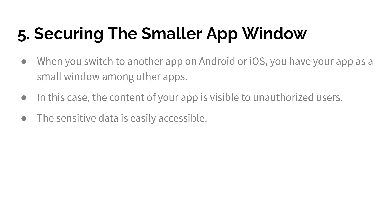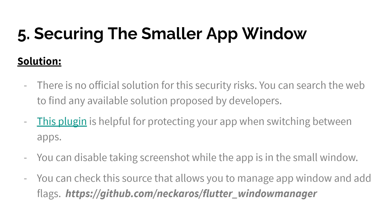The last one is securing the smaller app window. When you switch to another app on Android or iOS, your app appears as a small window in the multitasking or app-switching view. In this case, when you have sensitive data on your app and you switch apps, the content of your app is still visible to unauthorized users and the sensitive data is easily accessible. There is no official solution for this security risk — you can search the web for solutions proposed by developers. The 'secure application' plugin is helpful for protecting your app when switching between apps.